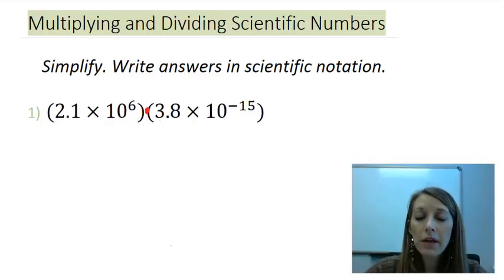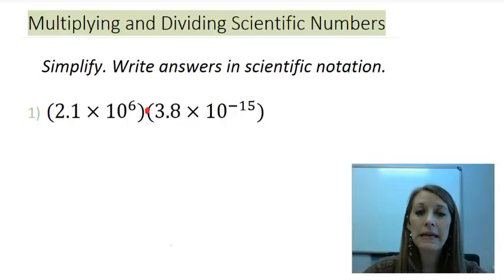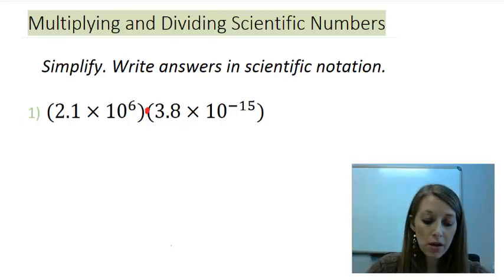We rely back on the properties that we know about real numbers, that multiplication is commutative and associative, meaning that we can rearrange the multiplication in any format and it not adjusts the answer. Here this is 2.1 times 10 to the 6 times 3.8 times 10 to the negative 15, so this is all multiplication in this example.